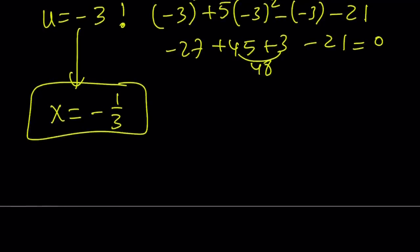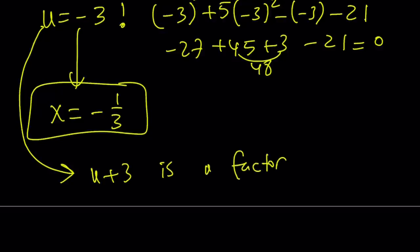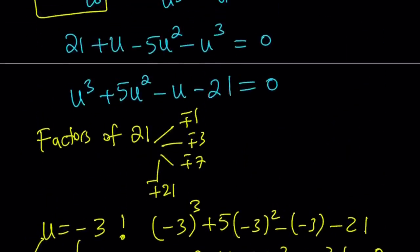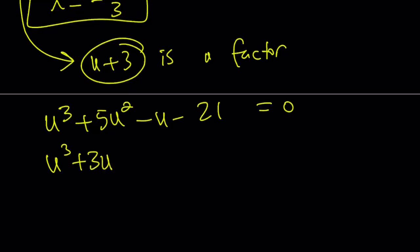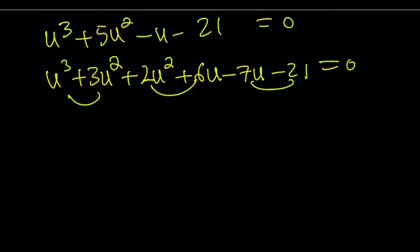How do you find that? By using the factor theorem. If u equals negative 3 is a solution, then u plus 3 is a factor. Now I can go ahead and tweak my expression accordingly. It is u cubed plus 5u squared minus u minus 21 equals 0. Since I know that u plus 3 is a factor, I'm just going to tweak this. So break down the 5u squared into 3u squared plus 2u squared. And then I need to add 6u to this because my goal is to make u plus 3 a factor. And then I have to balance out. Of course, I have to subtract 7u. And then minus 21 automatically comes in.